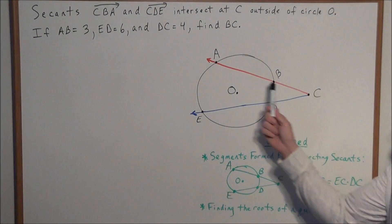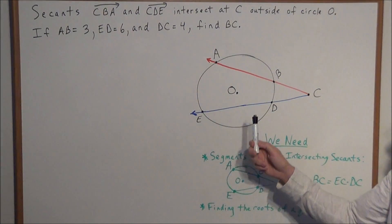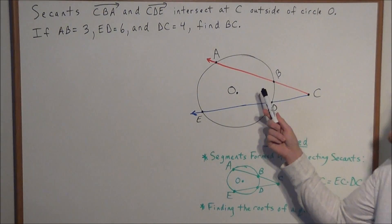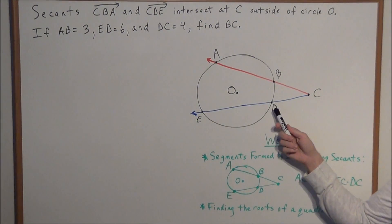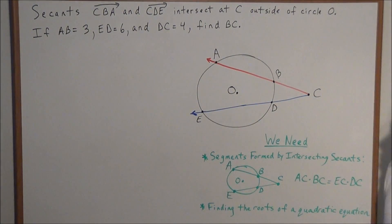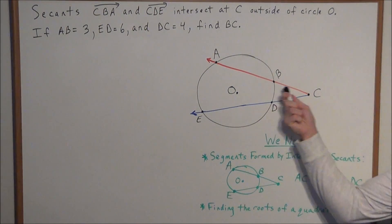Secants CBA and CDE intersect at point C outside of circle O. If AB equals 3, ED equals 6, and DC equals 4, find the length of line segment BC.